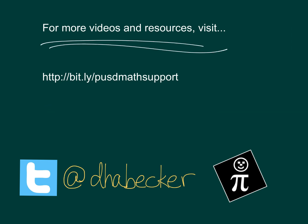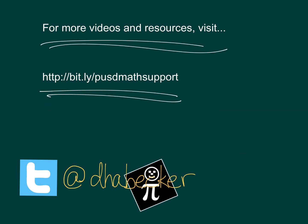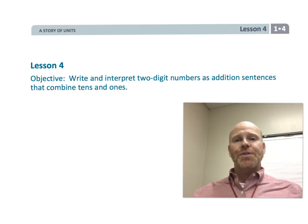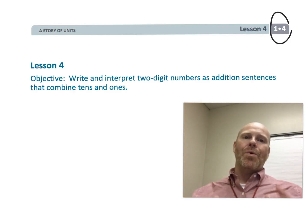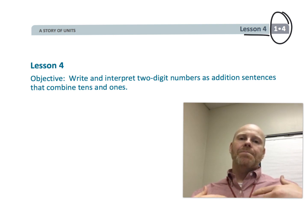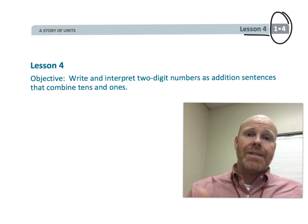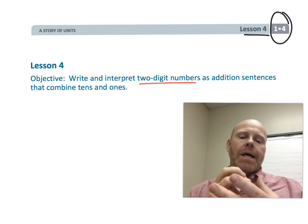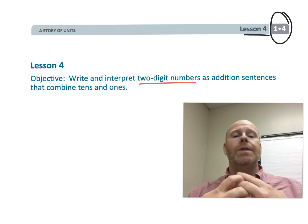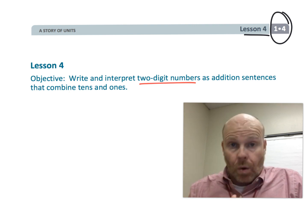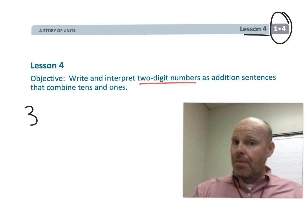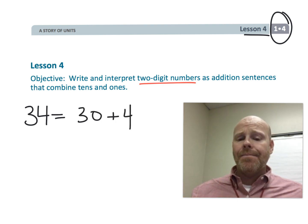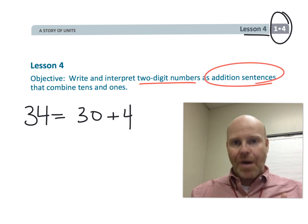This is First Grade Module 4 Lesson 4. In this lesson, students are going to be exposed to yet another way to represent a two-digit number. This time they're going to be taught that a two-digit number — let's say 34 — can be expressed as 30 plus 4. That's yet another way of representing a two-digit number.